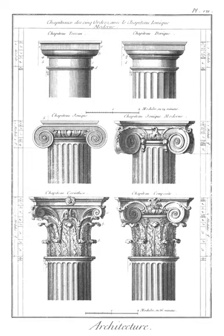Flying buttress: a specific type of buttress usually found on a religious building such as a cathedral. Flying rib: an exposed structural beam over the uppermost part of a building which is not otherwise connected to the building at its highest point — a feature of H-frame constructed concrete buildings and some modern skyscrapers.